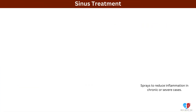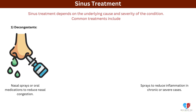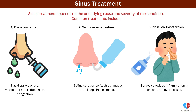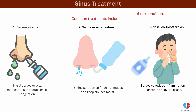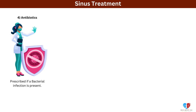Sinus treatment depends on the underlying cause and severity of the condition. Common treatments include: 1. Decongestants — over-the-counter nasal sprays or oral medications to reduce nasal congestion. 2. Saline nasal irrigation — using a saline solution to flush out mucus and keep sinuses moist. 3. Nasal corticosteroids — sprays to reduce inflammation in chronic or severe cases. 4. Antibiotics — prescribed if a bacterial infection is present.